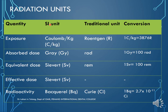Radiation units used to measure exposure: the SI unit for exposure is the coulomb per kg (older unit: roentgen). Absorbed dose is measured in grays, equivalent dose in sieverts, effective dose in sieverts, and radioactivity (which is different from radiation) is measured in becquerels.